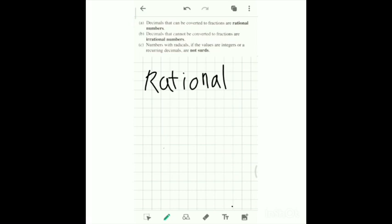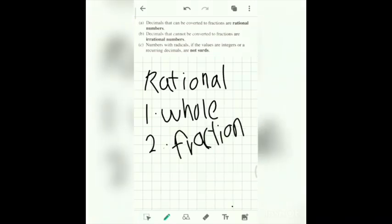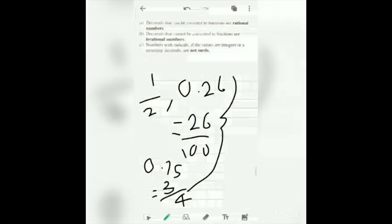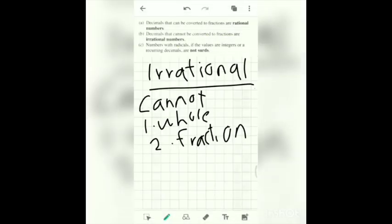Rational numbers is the number that can be converted to whole number and fraction. So the example of rational numbers is 1 over 2, 0.26 is actually 26 over 100, 0.75, 304 is the same as 304. So all of these numbers can be converted to a fraction.